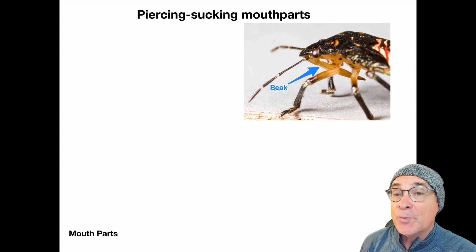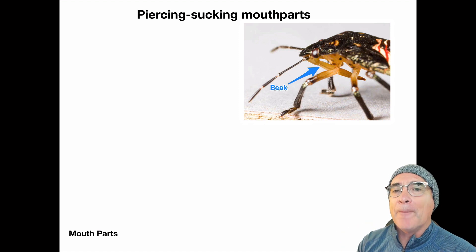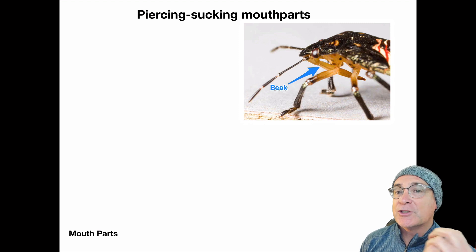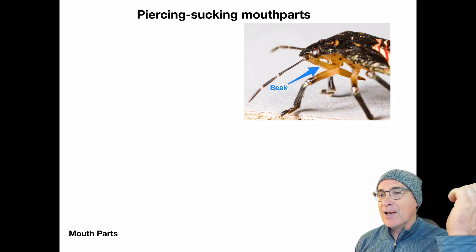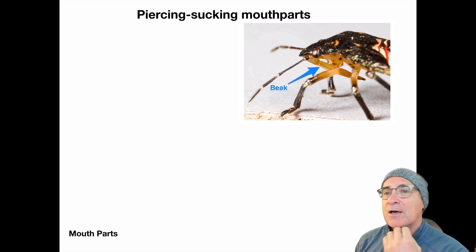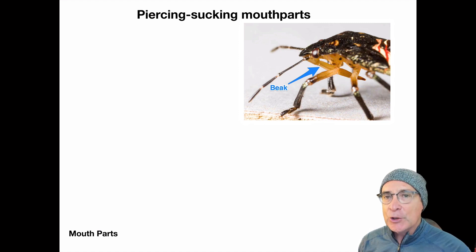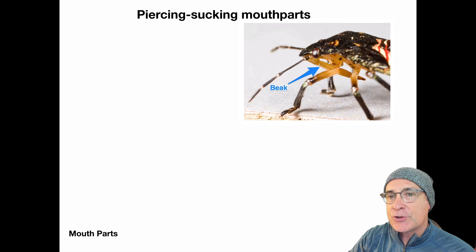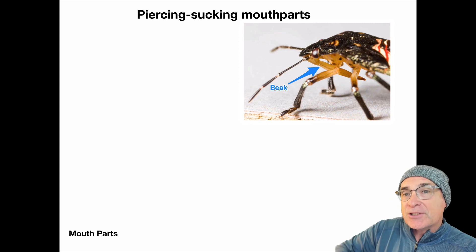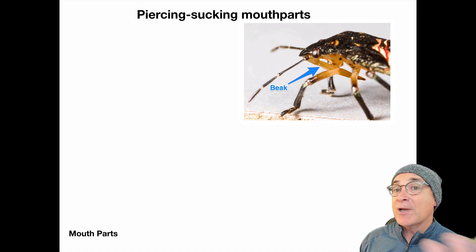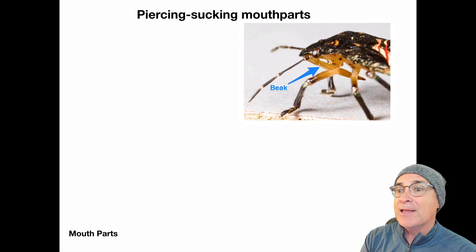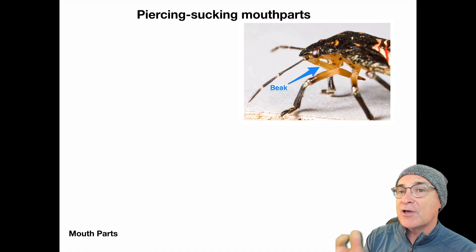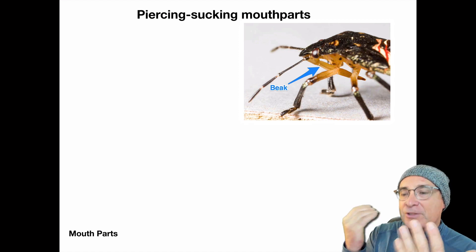This particular true bug has what we call a beak. All of them have a beak, and it's a cross between a sword and a straw. The straw runs down the middle of the beak, so it's covered and sharp on the outside. Once they insert the beak into a plant, it sucks out the plant's juices. If you're an assassin bug, you insert it into prey — even soft tissue — and suck out fluids.